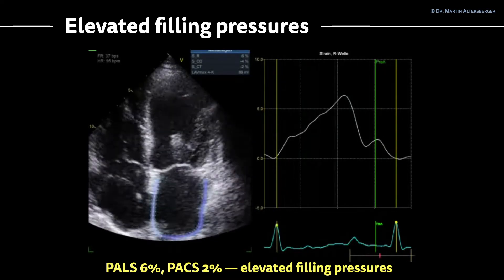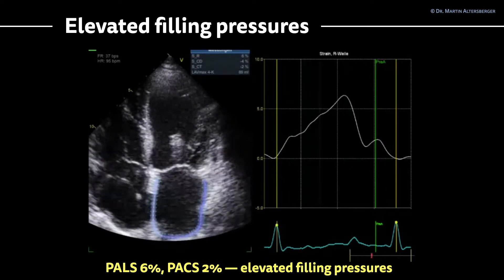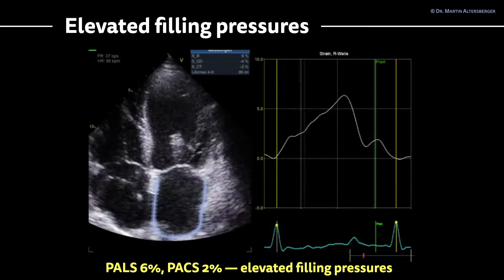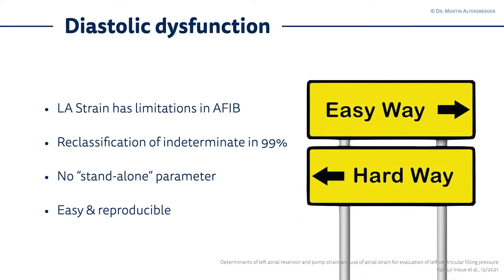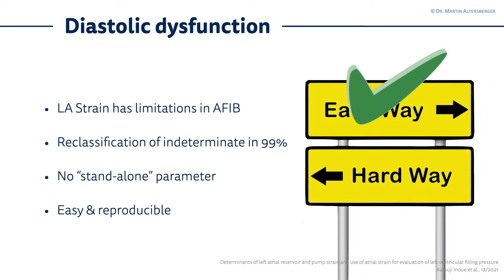So do use left atrial strain to be more sure about the evaluation of filling pressures. In diastolic dysfunction, it's very important to take the easier way. All the measurements are very complicated, but LA strain helps us to identify and reclassify the indeterminate situations in 99%. Be aware though, it is not a standalone parameter — you need all the other parameters we discussed. Overall, the left atrial strain is quite easy to do and it is reproducible.